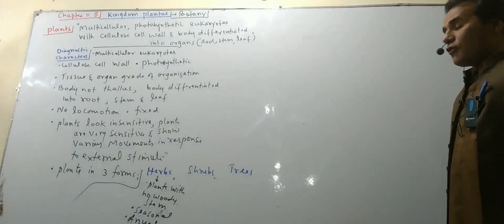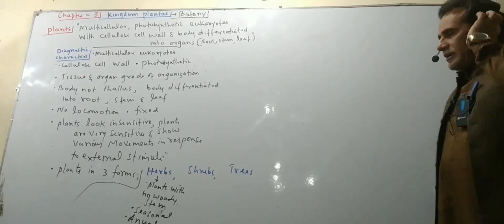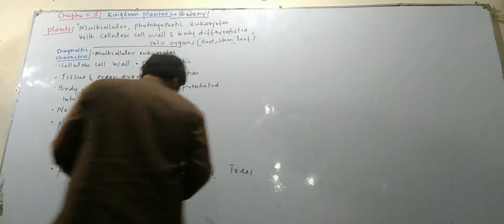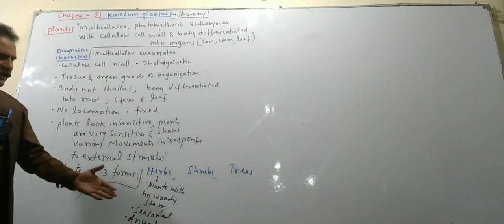Usually, herbs are seasonal — annual or seasonal. These plants are annual. Examples of herbs are wheat and grass. When a plant was planted for 4 to 5 months, it was a seasonal plant.